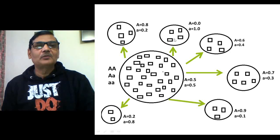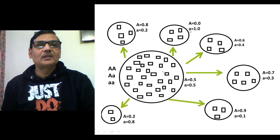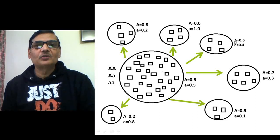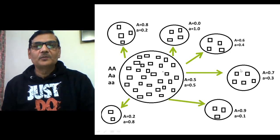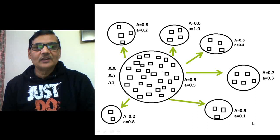In another founded population, the recessive allele small a gets fixed because its frequency becomes 100% (1.0) and the other allele's frequency is 0. In a third population the frequency of capital A is 0.6 and the other 0.4; in a fourth population capital A is 0.7 and the other 0.3; in a fifth population capital A is 0.9 and small a is 0.1; and in another population capital A is 0.2 and small a is 0.8.